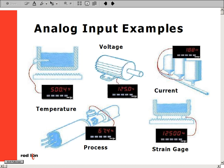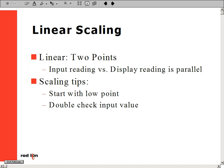Linear scaling of an analog signal is the most common type of scaling you can use to display a value different than your input. Linear scaling consists of 4 points: a low and high point of your input signal, and a low and high point of your display reading.